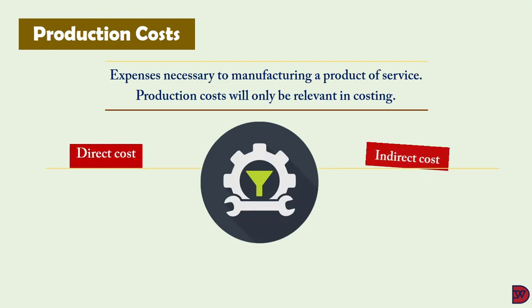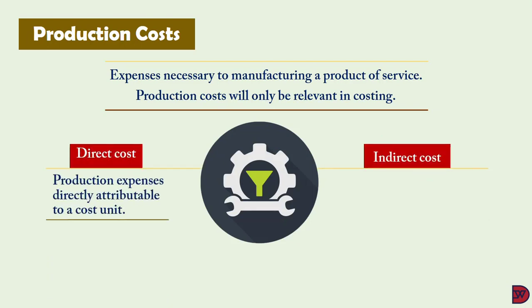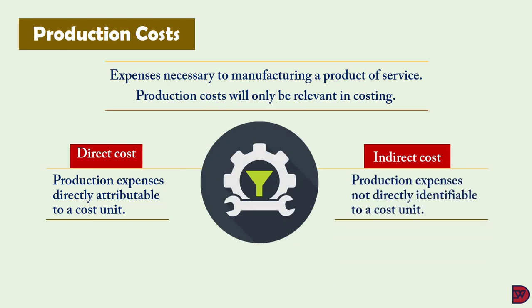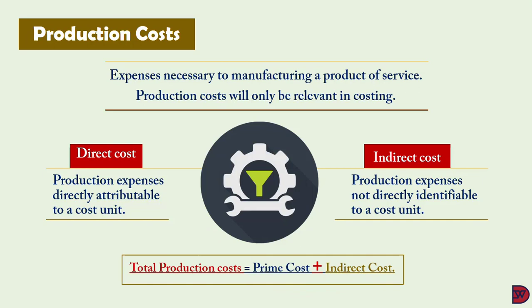Production costs can be further classified as direct and indirect. Direct costs are expenses that are directly attributable and identifiable to the product — for example, the cost of fabric, thread, and buttons are all direct to the production of a shirt. Indirect expenses, on the other hand, are costs that cannot be directly traced to the product but are necessary for its production, such as a needle or electricity. Total production cost equals prime cost (direct cost) plus indirect cost.